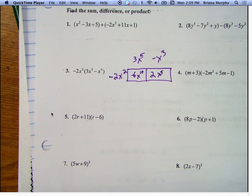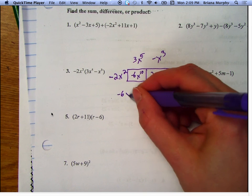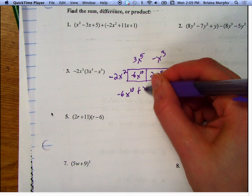Because this is multiplication, though. Multiplication you can't do it. Yep, and with addition and subtraction you can. So we get -6x¹⁰ plus 2x⁵.